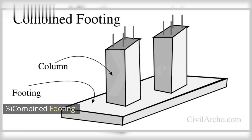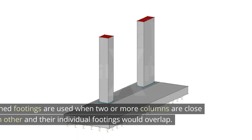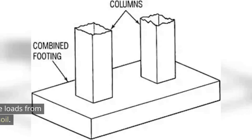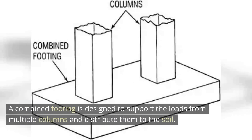3. Combined Footing: Combined footings are used when two or more columns are close to each other and their individual footings would overlap. A combined footing is designed to support the loads from multiple columns and distribute them to the soil.